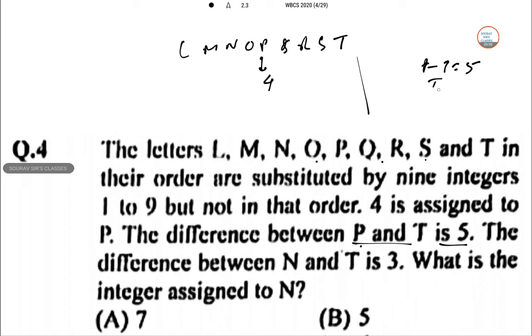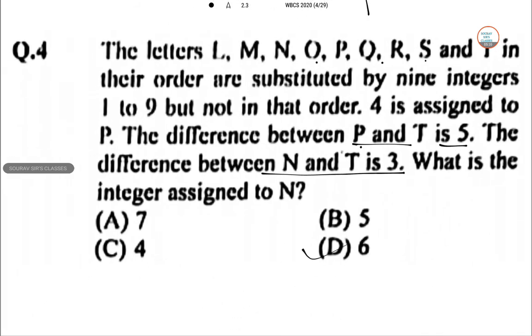P equal to 4. So T equal to T is obviously 9. T is 9. N and T difference is 3. So N will be 6. So 6 for 9 we have pointed out. Hence what is associated with N? Answer is 6. Next question.